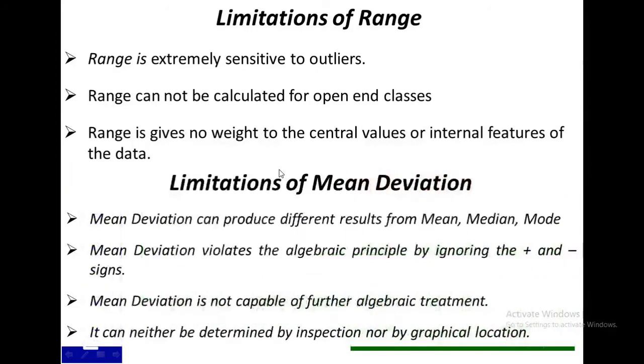On the other hand, mean deviation can produce different results from mean, median, and mode because we can calculate mean deviation from any of these three measures. In addition, mean deviation violates algebraic principles by ignoring the plus and minus signs. It is not capable of further algebraic treatment like t-tests or correlation. And lastly, it can neither be determined by inspection nor by graphical location.